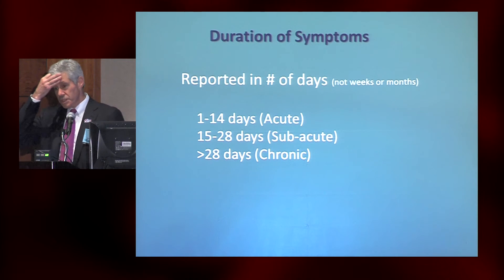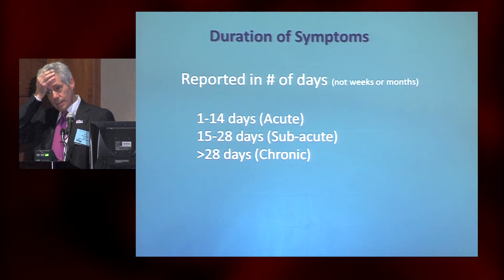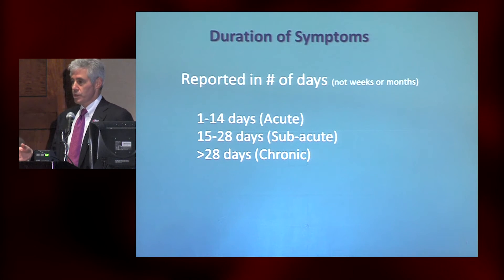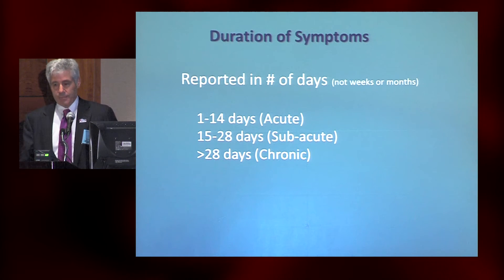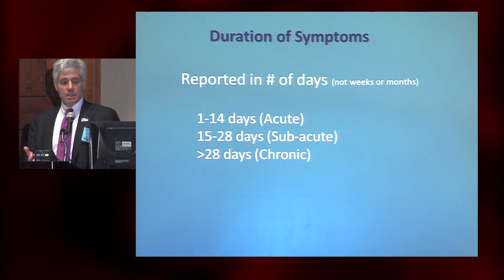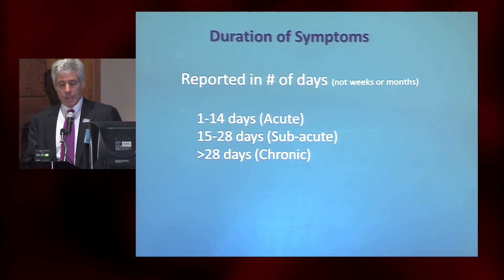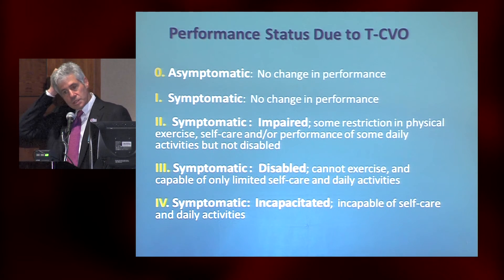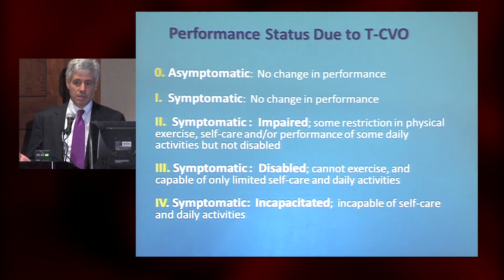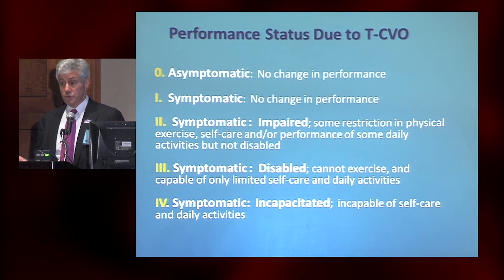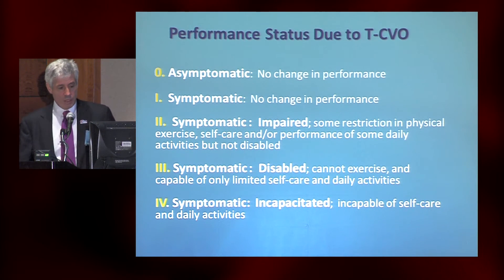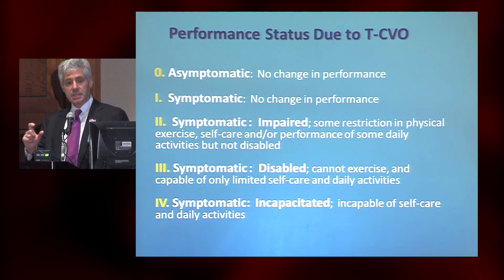Duration of symptoms was something we wrestled with. We scoured the literature — there's very little reported. We turned to the lower extremity venous obstruction literature. For lower extremity, the accepted baskets of duration are acute, subacute, and chronic, and should be reported in number of days, since days are continuous — weeks or months can be discontinuous measures. Finally, performance status due to thoracic central vein obstruction: some patients have complete occlusion but are asymptomatic. Some are symptomatic but not impaired in daily activities; some are symptomatic and impaired, some are disabled, and some are incapacitated.